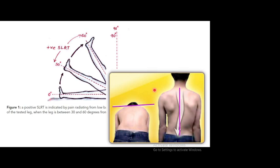Another simple test: if suspecting scoliosis, get the patient to bend forward without bending at the knees. In the image you can see a slight bump on one side of the back — this is a sure sign of thoracic scoliosis with a rotational deformity. One side will show a hump when the patient bends forward. These tests take only two or three minutes, so please do them.